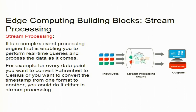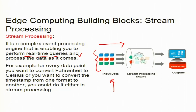The edge computing building block of stream processing is a complex event processing engine that enables you to perform real-time queries and process data as it comes, like a water stream. This real-time stream processing was earlier carried out by the cloud, but now the stream processing engine can run at the edge. For example, you may want to convert every data point from Fahrenheit to Celsius or convert a timestamp from one format to another on the fly in real time — that is stream processing.